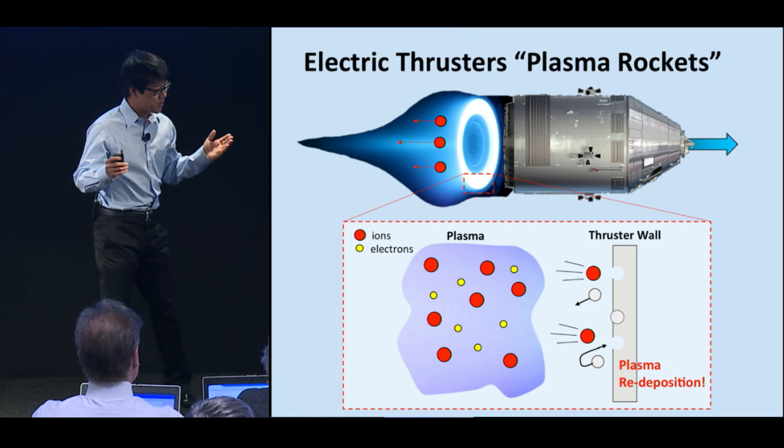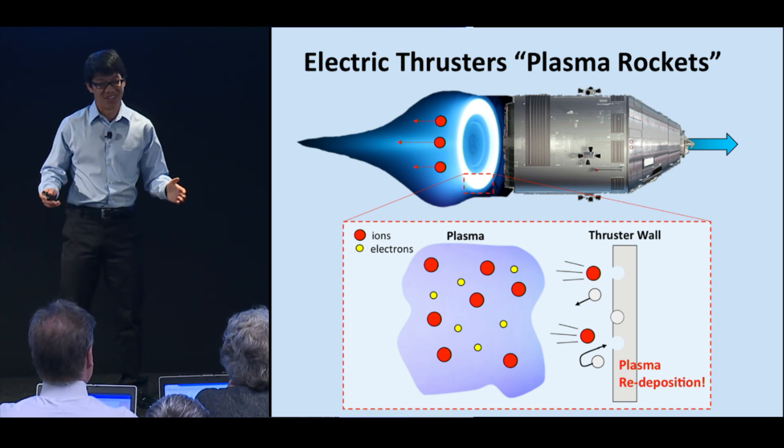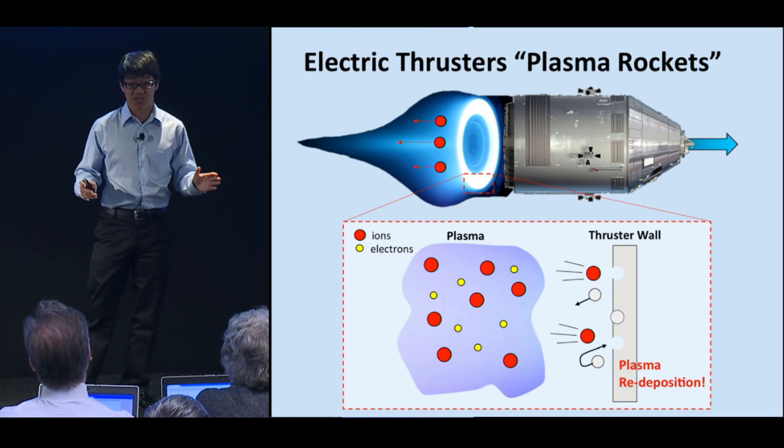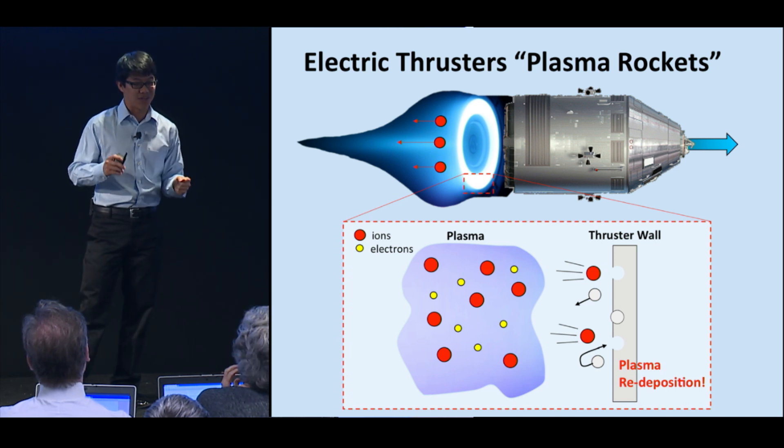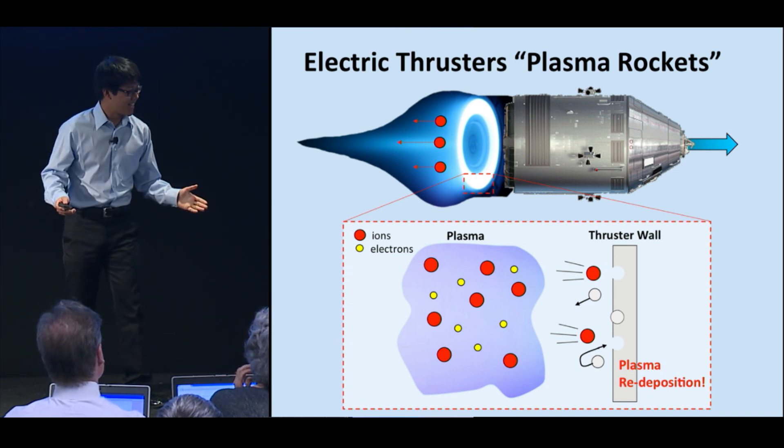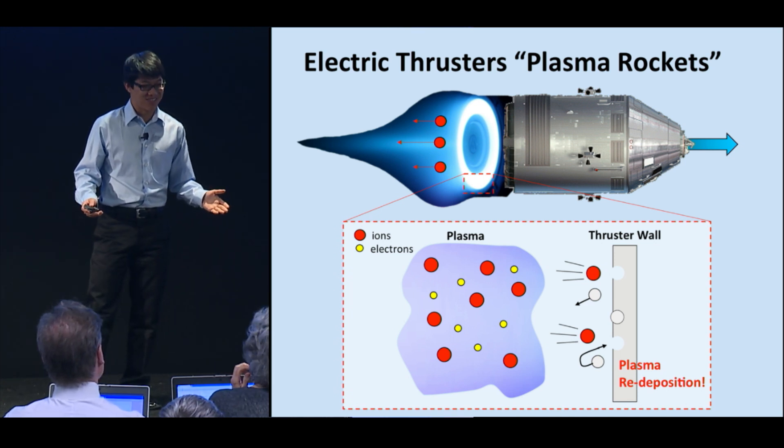So, why haven't we gone to Mars yet? Well, this thruster must operate for many years for a Mars mission. Imagine what would happen if you left your car running for a few years. It would break, and so will your plasma thruster if you run it long enough.